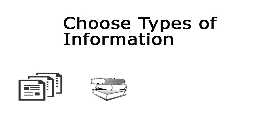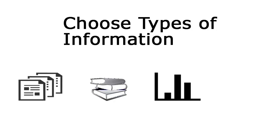Next, think about what types of information you need to find. This will really depend on the topic. Scholarly articles are common, but books are useful for broader topics when getting an overview, and are more common in some areas. You might need data and statistics, business information, or a primary source like a film or a diary that you'll be analyzing.